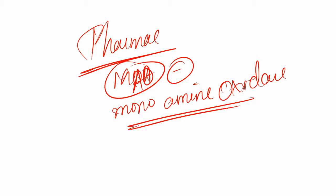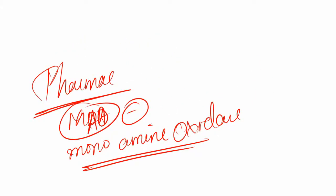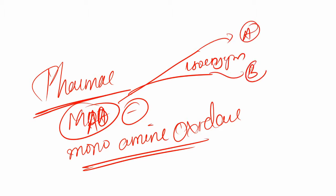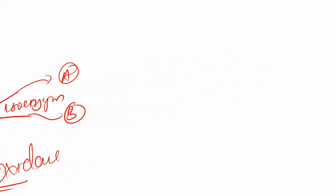They are classified into two isoenzymes - it can be a biochemistry question or a pharma question. We have type A and type B. Type A is mainly responsible for synthesis of norepinephrine, serotonin, and tyramine.